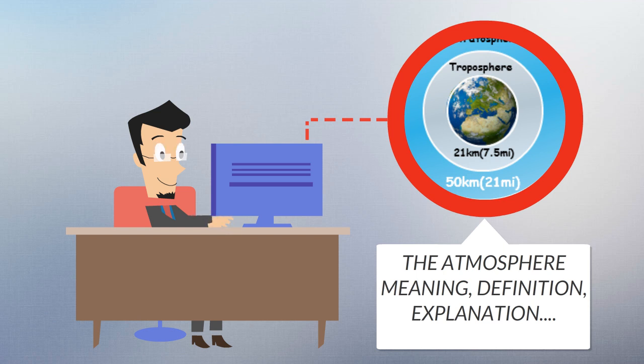Nitrogen is fixed by bacteria and lightning to produce ammonia, used in the construction of nucleotides and amino acids. Carbon dioxide is used by plants, algae and cyanobacteria for photosynthesis.